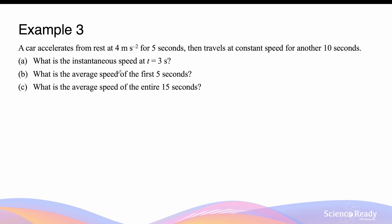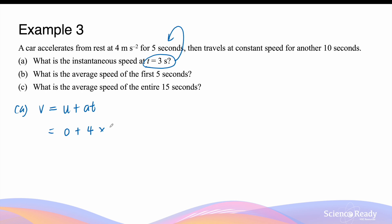A car accelerates from rest at 4 meters per second squared for 5 seconds, then travels at constant speed for another 10 seconds. The instantaneous velocity at t = 3 is in the first 5 seconds when the car is accelerating. Using v = u + at: initial velocity is zero, acceleration is 4 m/s², and time is 3 seconds. This gives 12 meters per second as the instantaneous velocity.